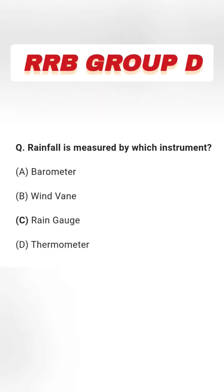Next question: Rainfall is measured by which instrument? Options are barometer, wind vane, rain gauge, and thermometer. The right answer is option C, rain gauge.